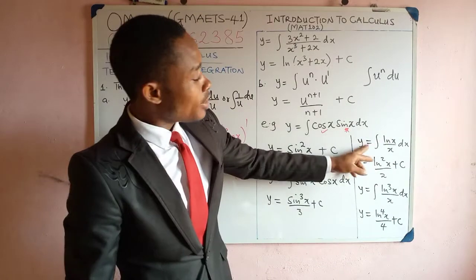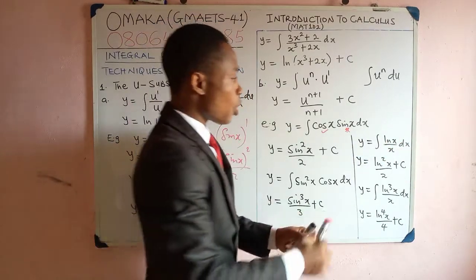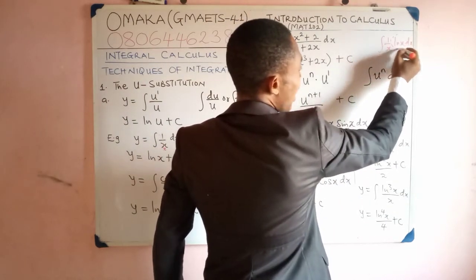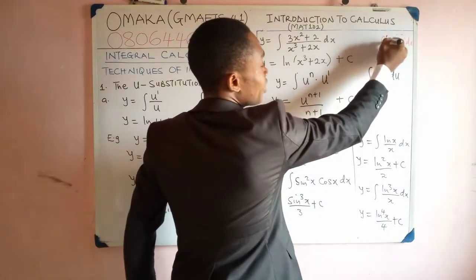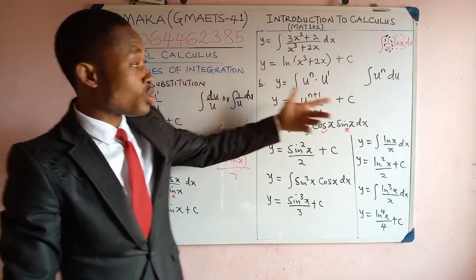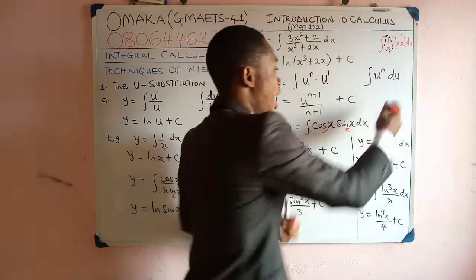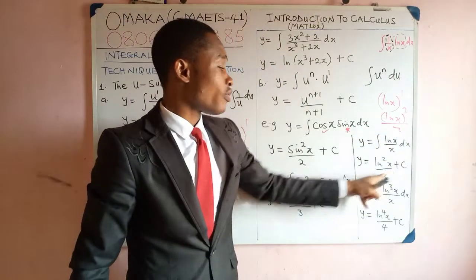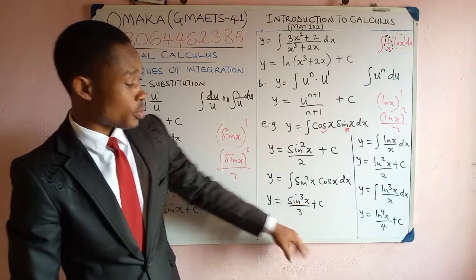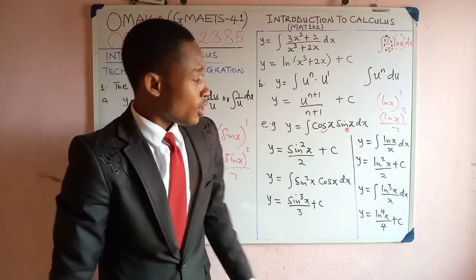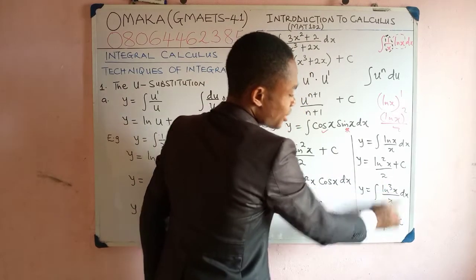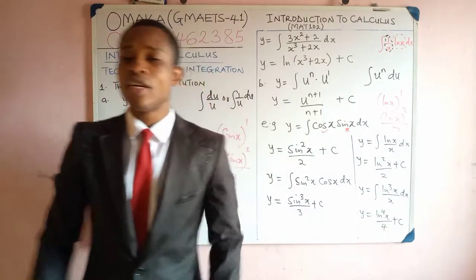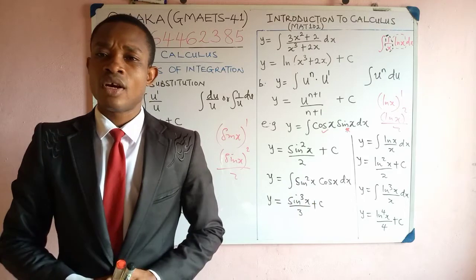Now consider y equals integral of 1 over (x · ln x) dx. Notice this is the same as integral of 1 over x times 1 over ln x dx. If you differentiate ln x, you get 1 over x. Therefore, use this form of u-substitution: add 1 to the power of ln x. Since ln x is the same as ln x raised to the power 1, adding 1 gives ln²x over 2 plus c. Similarly, for integral of ln³x over x dx, forget about the power — differentiating ln x gives 1 over x — so add 1 to the power to get ln⁴x over 4 plus c. That is u-substitution, and we are going to see more cases.